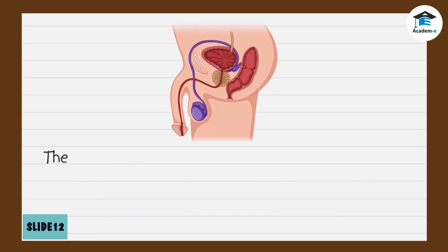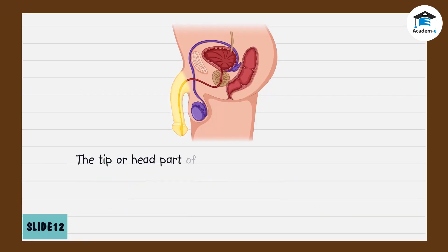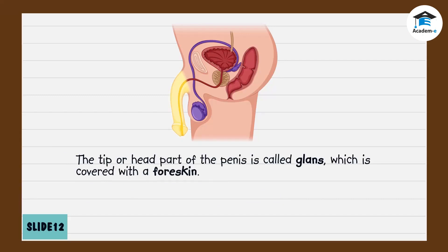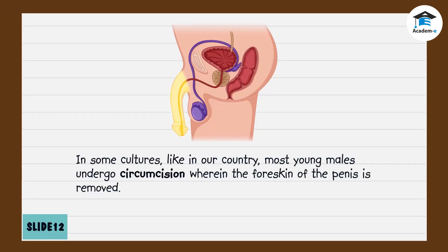Outside of the body, the urethra is supported by an elongated muscular organ called the penis. The penis supports the urethra during ejaculation. The tip or head part of the penis is called the glans, which is covered with a foreskin. In some cultures, like in our country, most young males undergo circumcision, wherein the foreskin of the penis is removed.